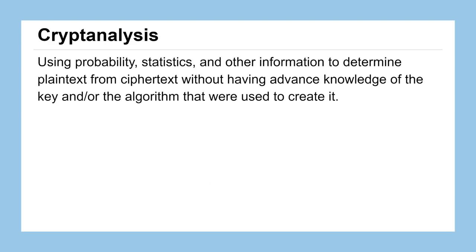Another aspect of this course that we'll get to in a couple of weeks is called cryptanalysis, and this is using mathematics like probability, statistics, and other information to try and go the other way with this. Suppose that we had a ciphertext and we wanted to know what the original plaintext was. Could we reverse this process without having any advanced knowledge of the key or the algorithm that were used to create it?